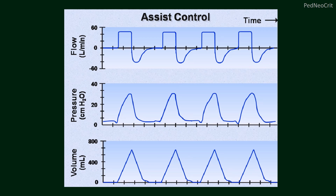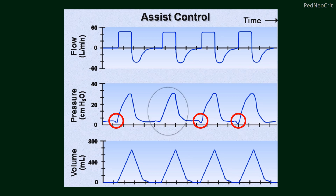All breaths, once triggered — either patient-triggered or time-triggered — are treated the same and have a constant tidal volume or peak inspiratory pressure. This is the waveform in assist control ventilation: the top is flow waveform, middle is pressure waveform, and bottom is volume waveform. All breaths are of similar character and provide equal tidal volume. In the pressure waveform, you will notice negative indentations before some breaths — these indicate the patient's spontaneous effort, meaning those are patient-triggered breaths. Where there is no negative indentation, that is a machine-triggered or time-triggered breath.